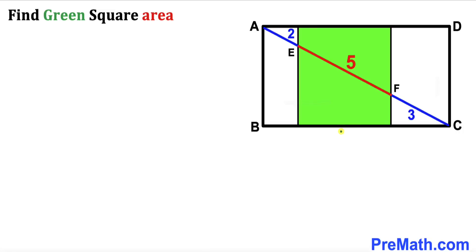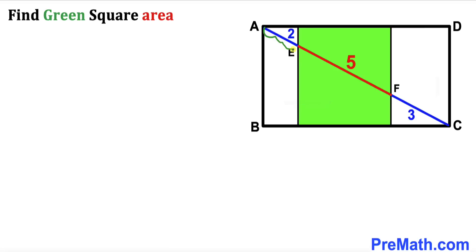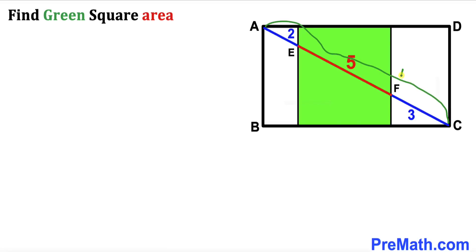Welcome to Premath. In this video we have a green square fully confined in a rectangle ABCD, as shown in the diagram. We also have the diagonal AC of this rectangle, such that segment AE is 2 units, segment EF is 5 units, and segment CF is 3 units — meaning the whole diagonal AC is 10 units. Our task is to calculate the area of this green shaded square.